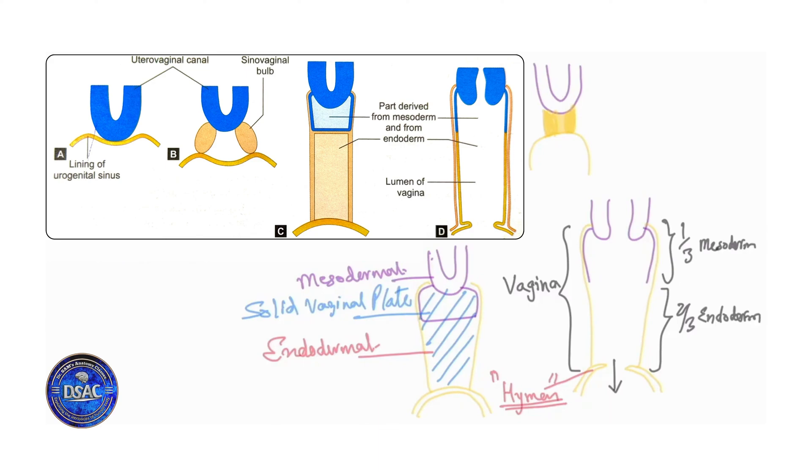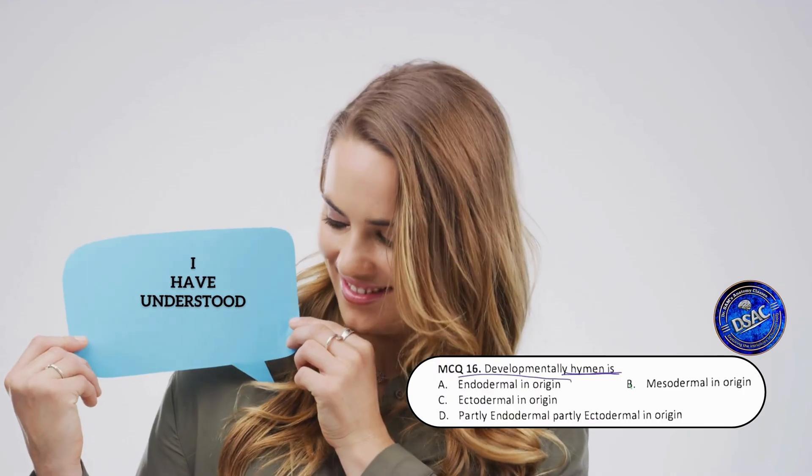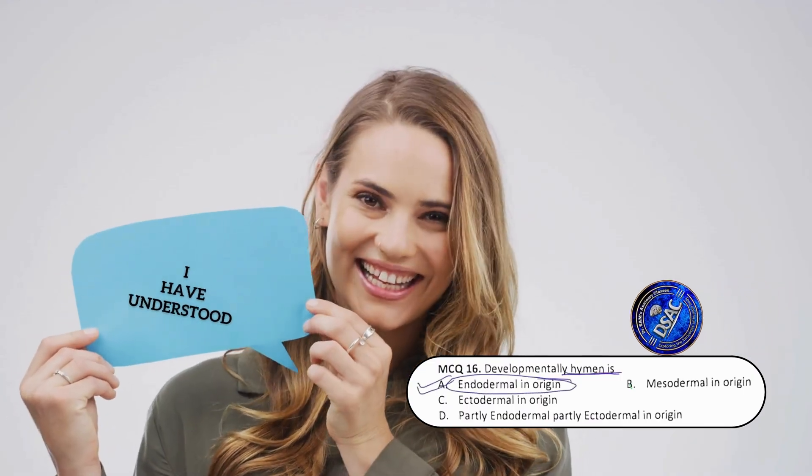So the hymen you see is completely formed by the urogenital sinus. So that means hymen is completely endodermal in origin. So the question here was development of hymen is? Answer you've got it now. It is only endodermal in origin.